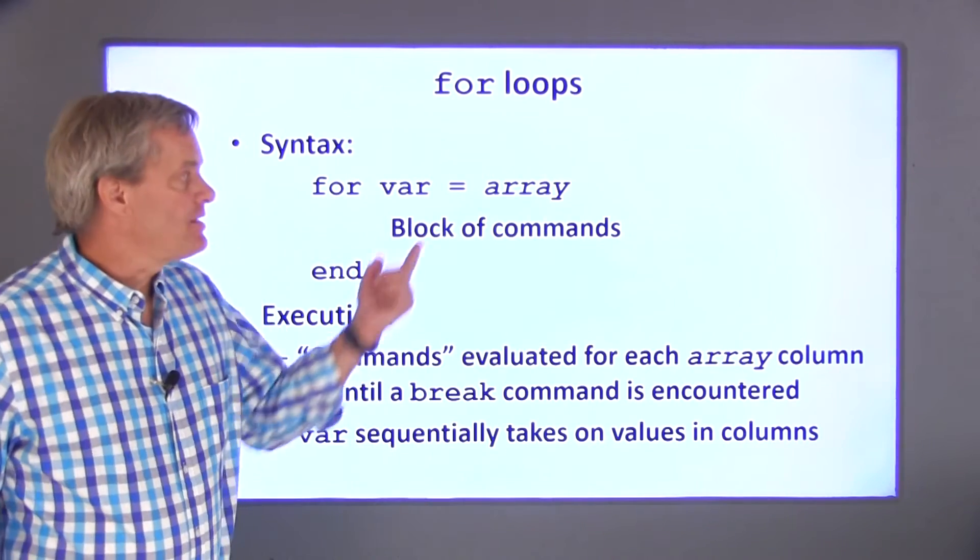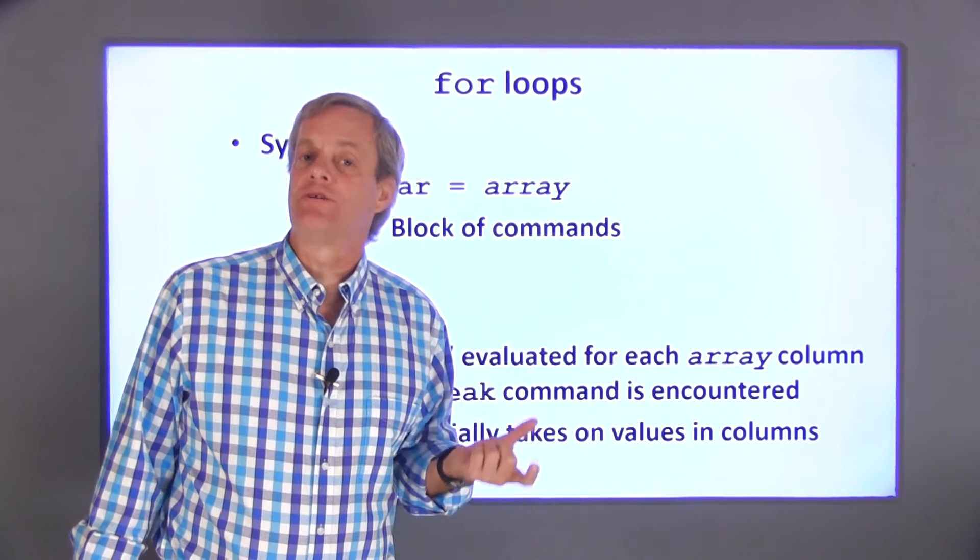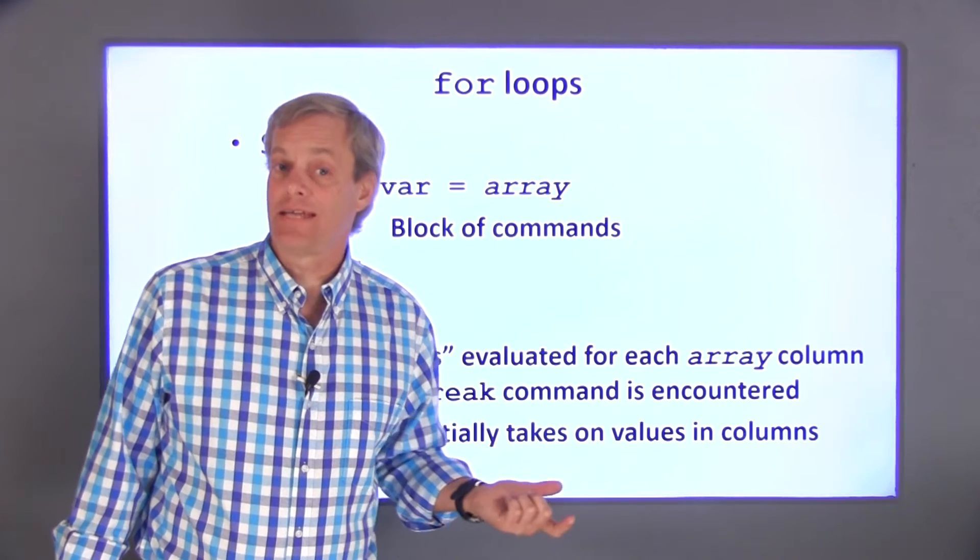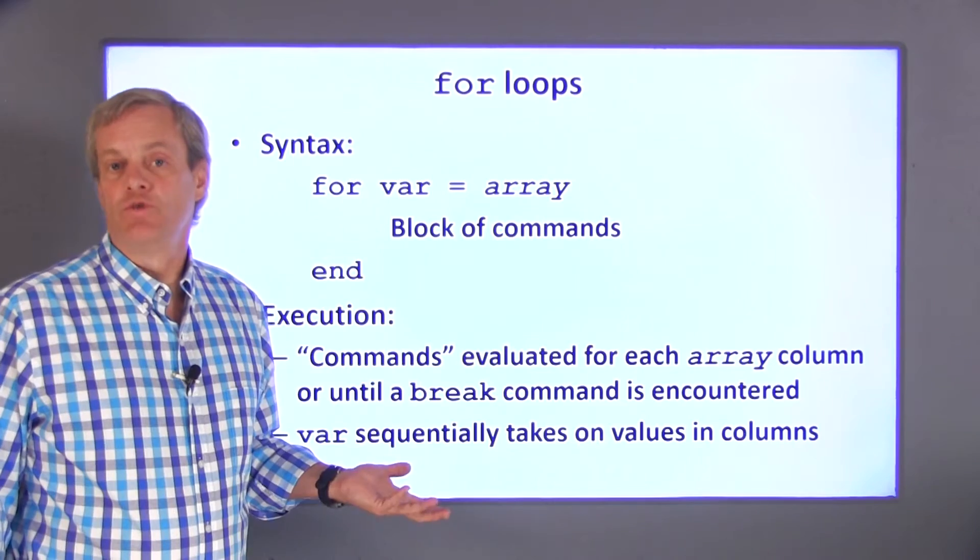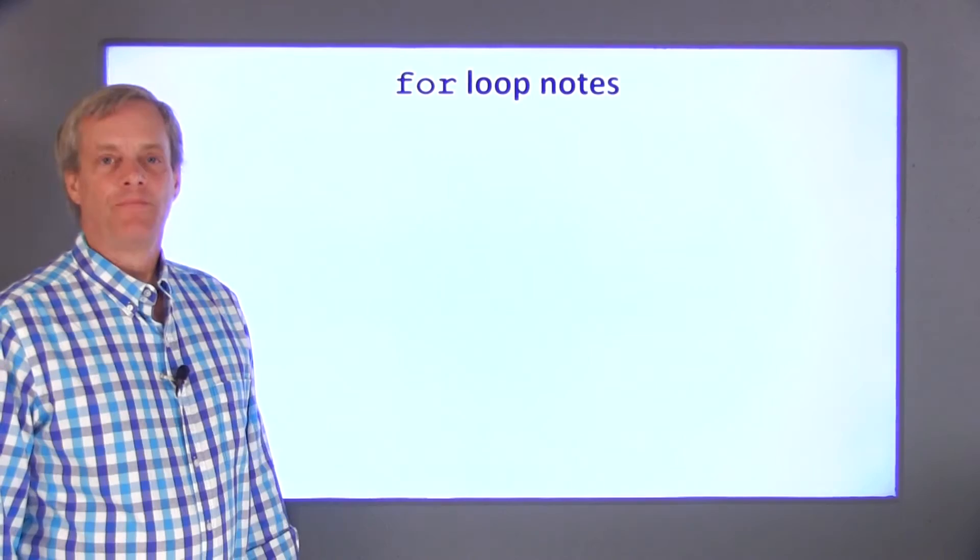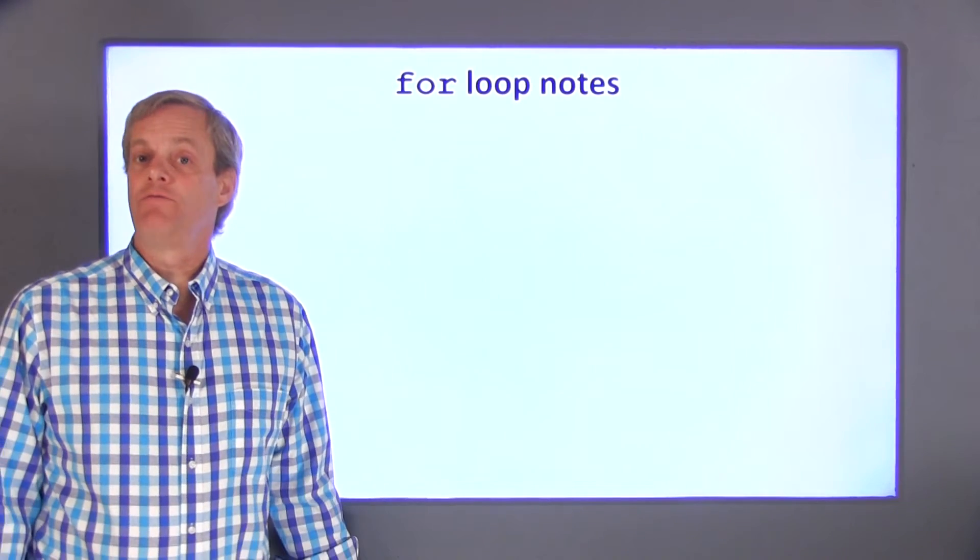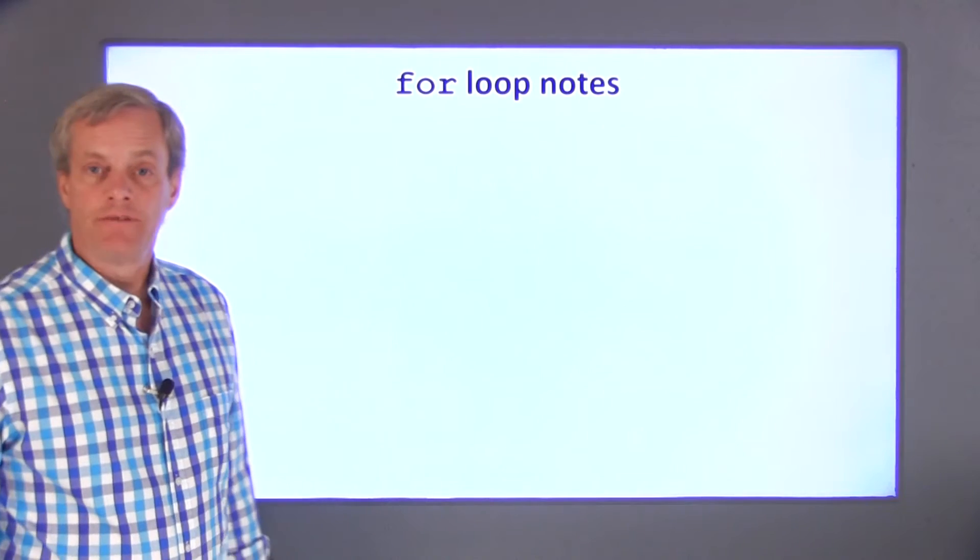In the special case in which array is a row vector, each column of array is a scalar, and var successively takes on the individual values in the array. Before doing some examples, there are a few notes about for loops that I want to emphasize.